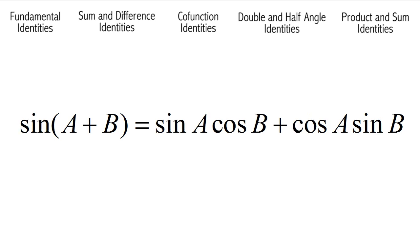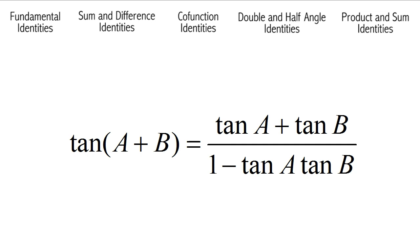Sine of angle A plus B is equal to sine A times cosine B plus cosine A times sine B. Sine of angle A minus B is equal to sine A times cosine B minus cosine A times sine B. Tangent of A plus B is equal to tangent A plus tangent B, all over 1 minus tangent A times tangent B. Tangent of angle A minus B is equal to tangent A minus tangent B, all over 1 plus tangent A times tangent B.